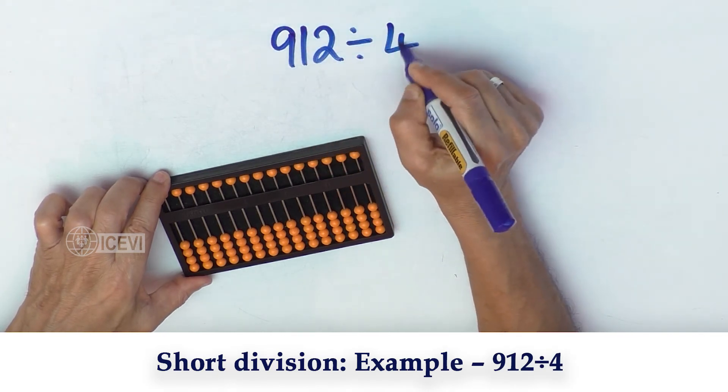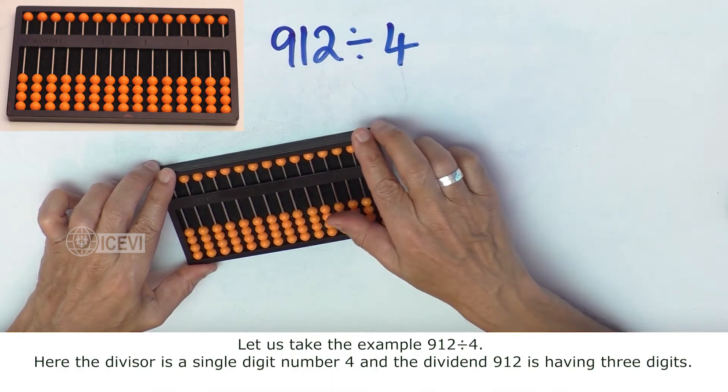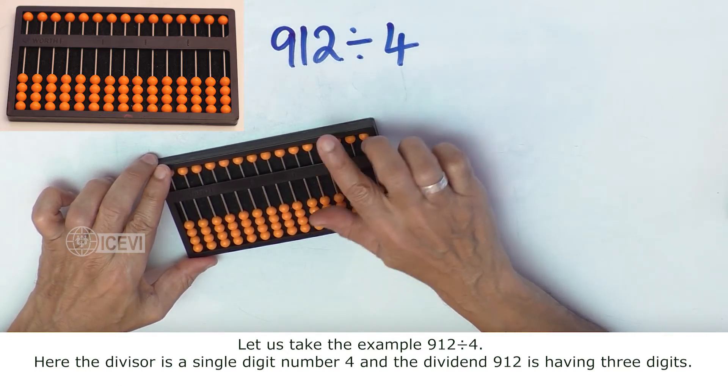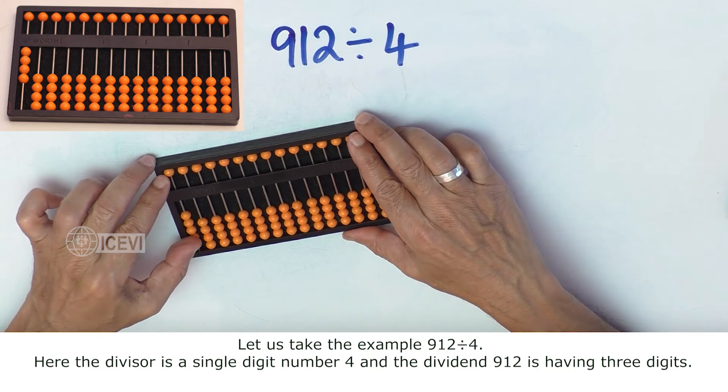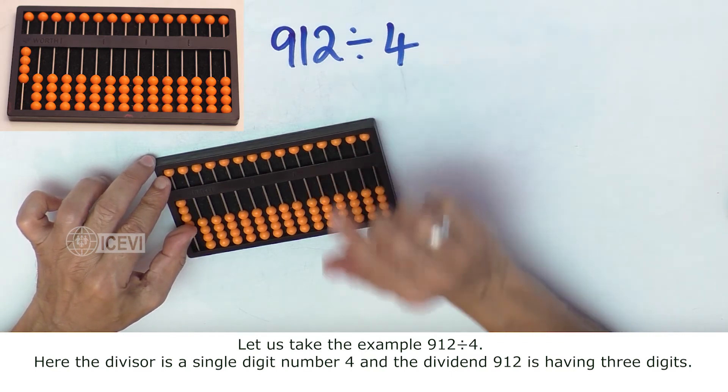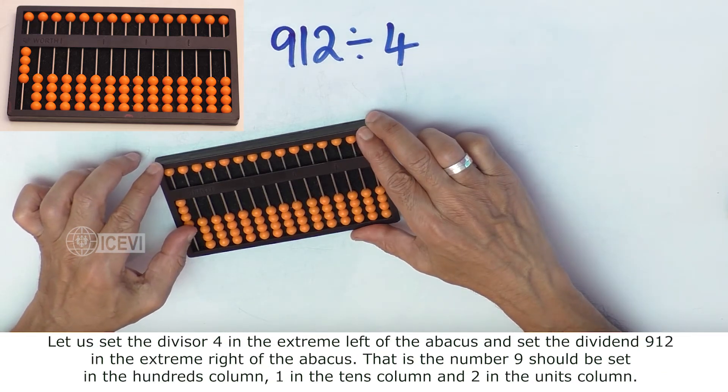Let us take this example: 912 divided by 4. Here the divisor is a single digit number, 4, and the dividend 912 has 3 digits. Let us set the divisor in the extreme left of the abacus.